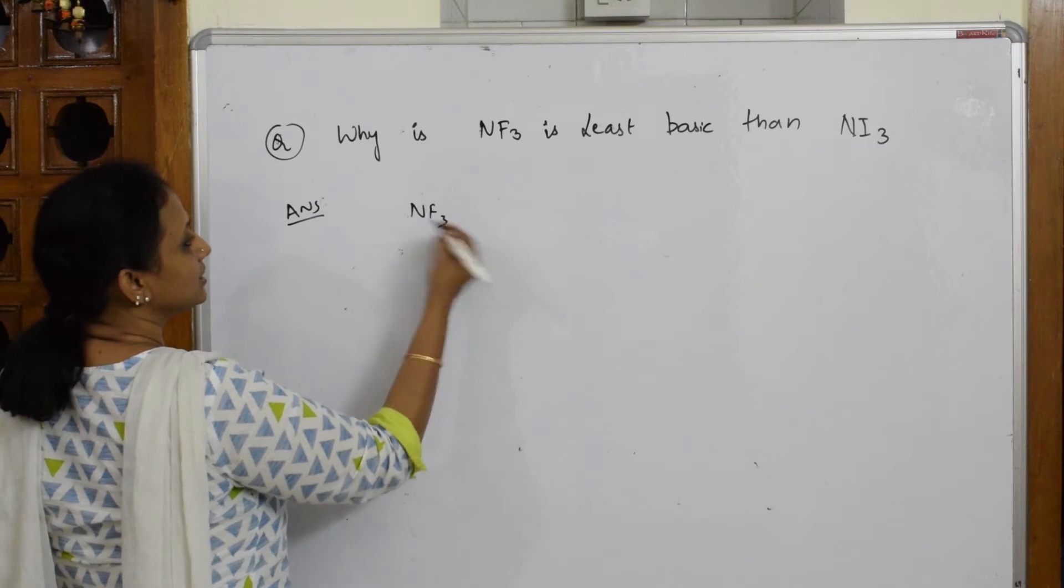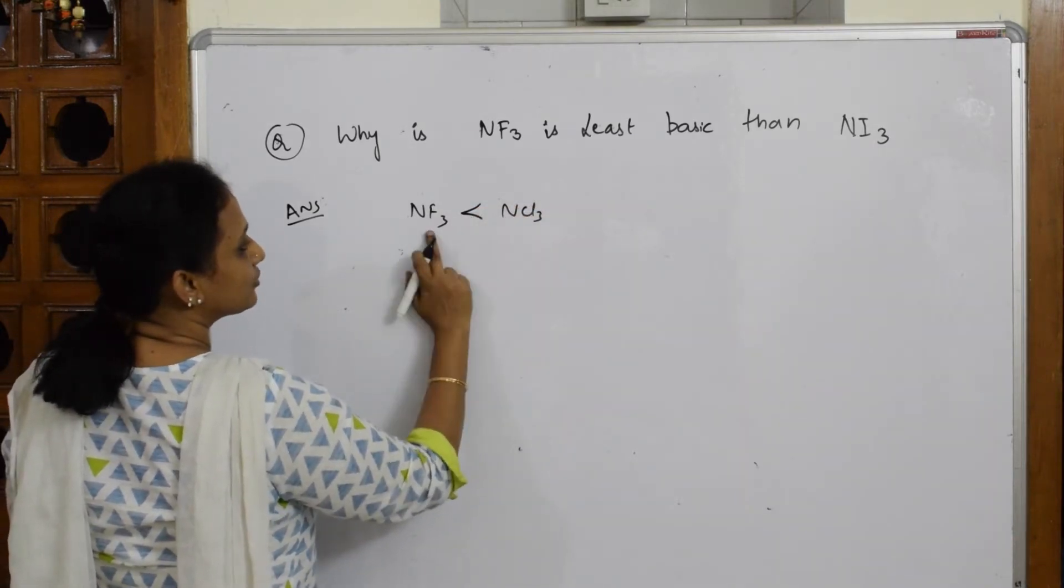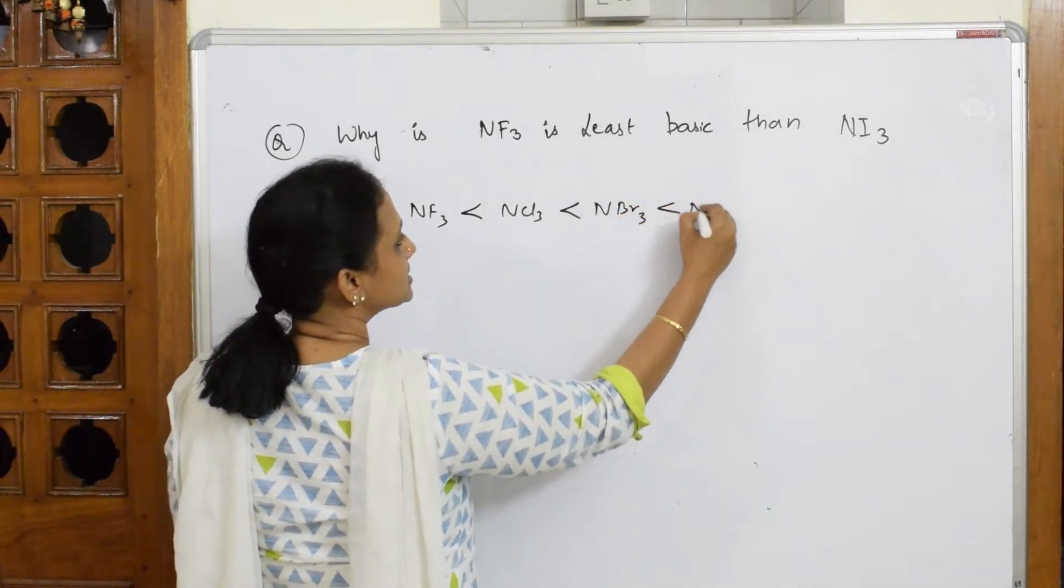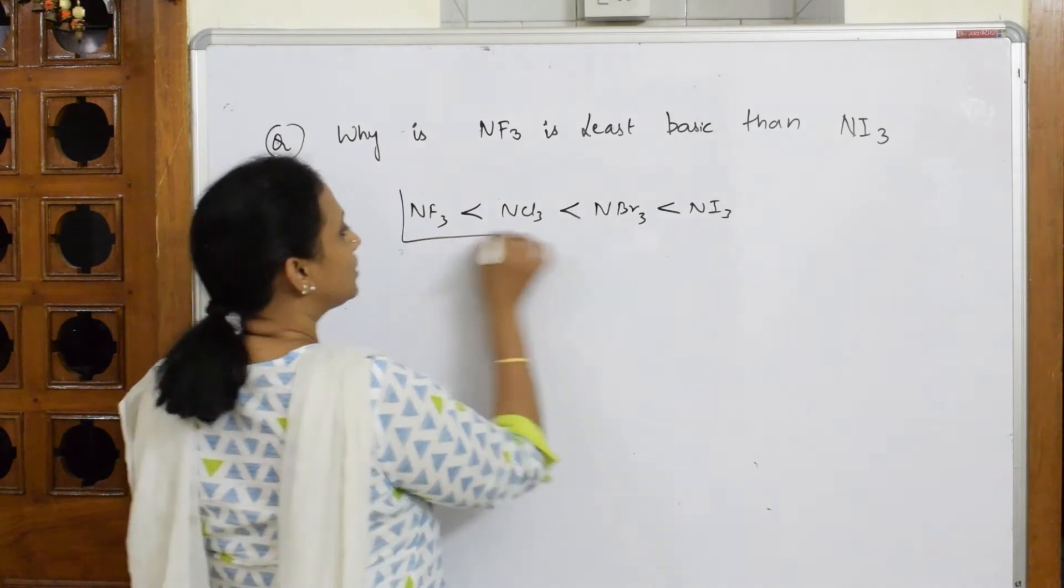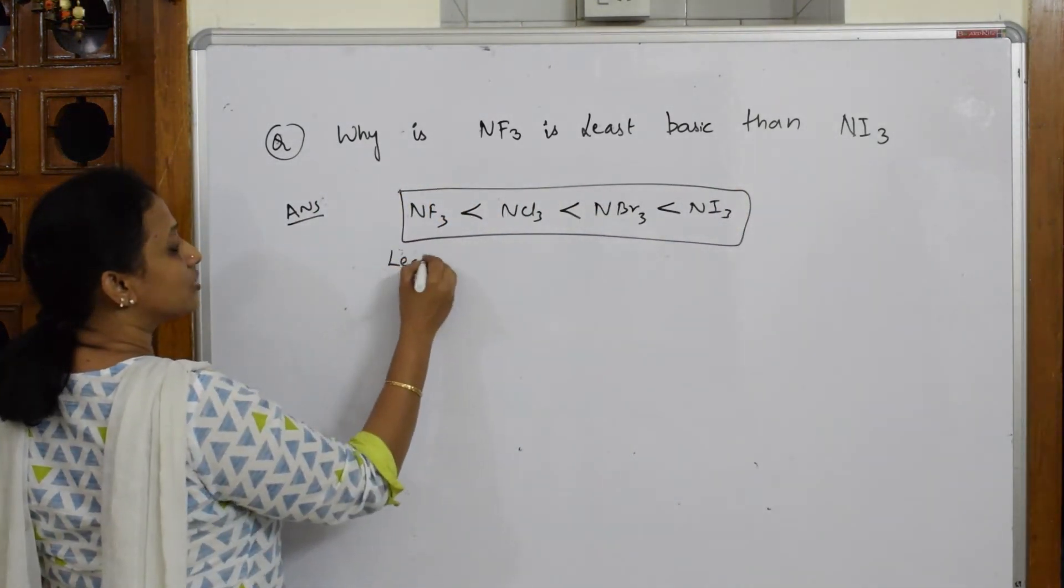They've given me a question that means NF3 is less basic than NCl3. Why did I write NCl3? After fluorine is chlorine, less than NBr3, less than NI3. This is what they said.